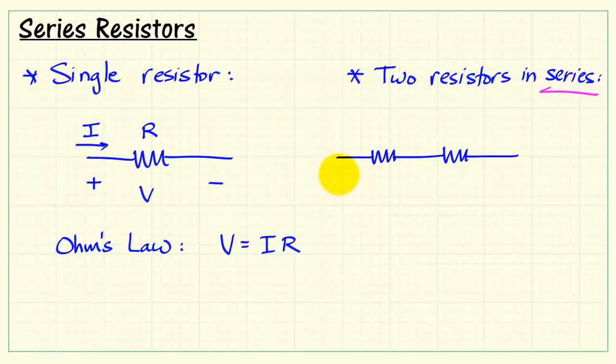The distinguishing feature of a series connection is that the current that passes through the first resistor is exactly the same as the current that passes through the second resistor and is the same as the current that eventually leaves the series combination. All resistors share the same current.